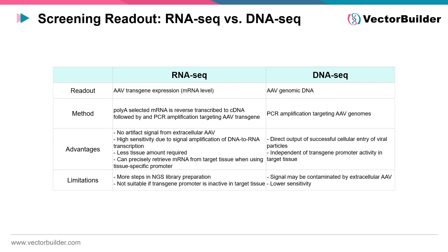When preparing sequencing libraries after screening your AAV capsid libraries, the choice between RNA and DNA preparation methods becomes a pivotal decision. RNA library preparation is suited for capturing the transcriptome, which will only identify variants where the transgene is expressed. DNA library preparation offers a broader scope, enabling the characterization of all AAV variants able to enter cells through PCR of the AAV genomic DNA. Both methods have their advantages and disadvantages, and researchers must choose the approach best suited for their project.